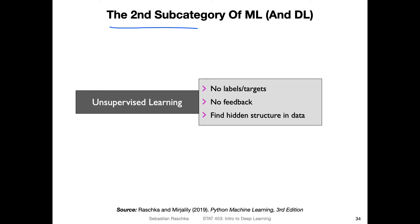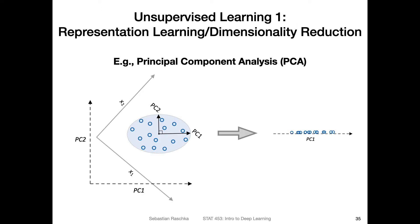Let's now talk about the second subcategory of machine learning, and of course it also implies it's a subcategory of deep learning. This is unsupervised learning, which in contrast to supervised learning does not use any labels or targets — we don't have any feedback here. It's more about finding a hidden structure in the data, so we can think of unsupervised learning as representation learning. This is sometimes also used for dimensionality reduction, though that's just one application of it.